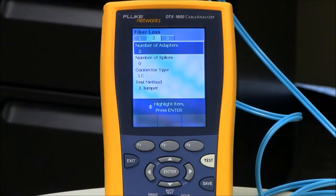And then I've also got my test method. It's set to one jumper, because I'm jumping from the main to the remote unit in one hop. I'm not going through a bulkhead adapter.